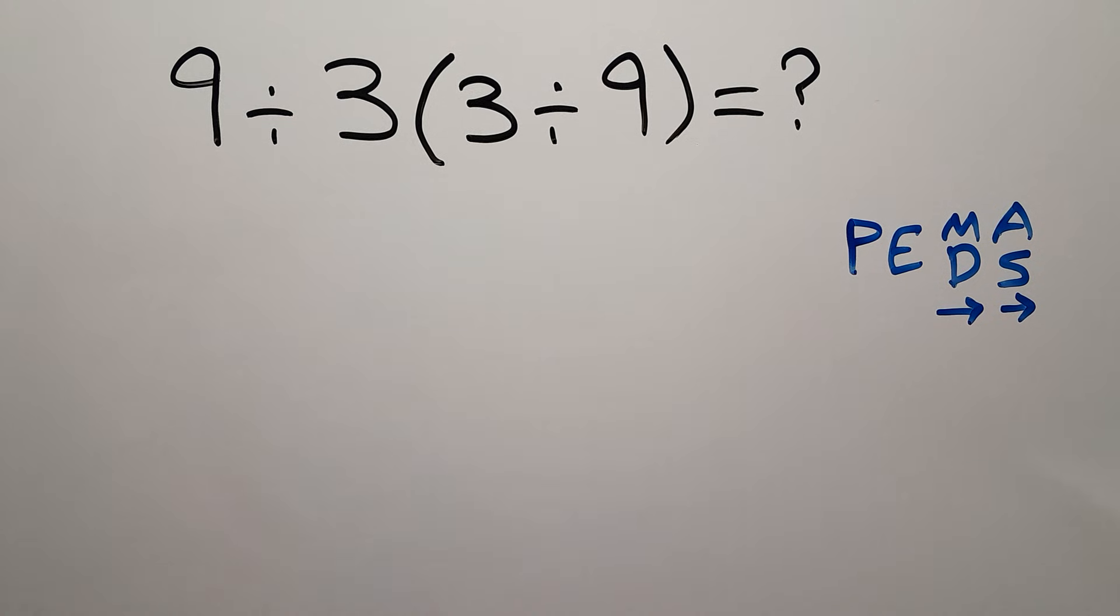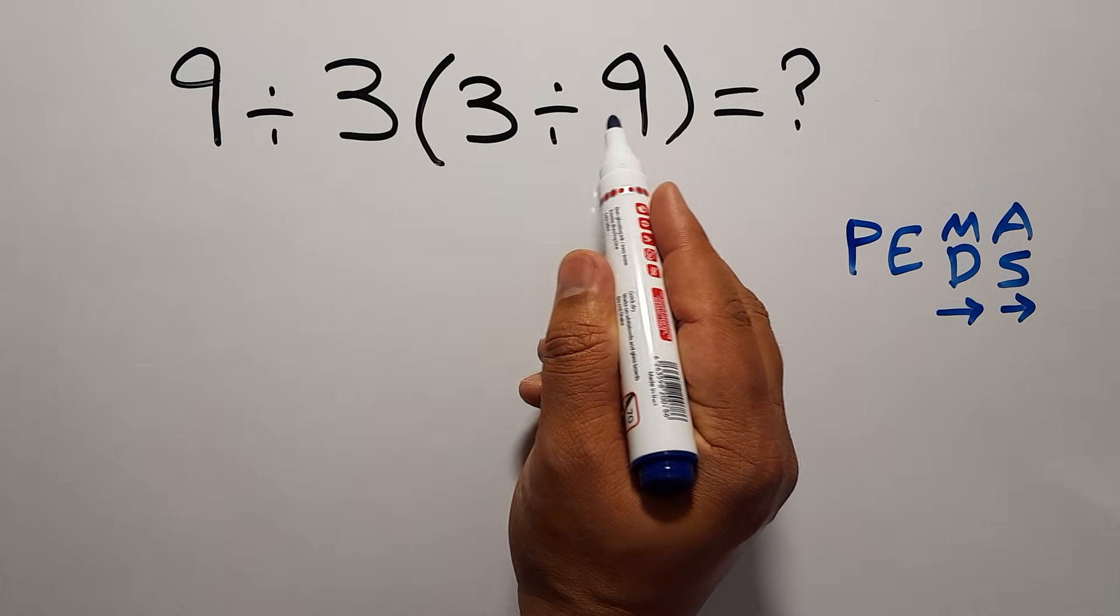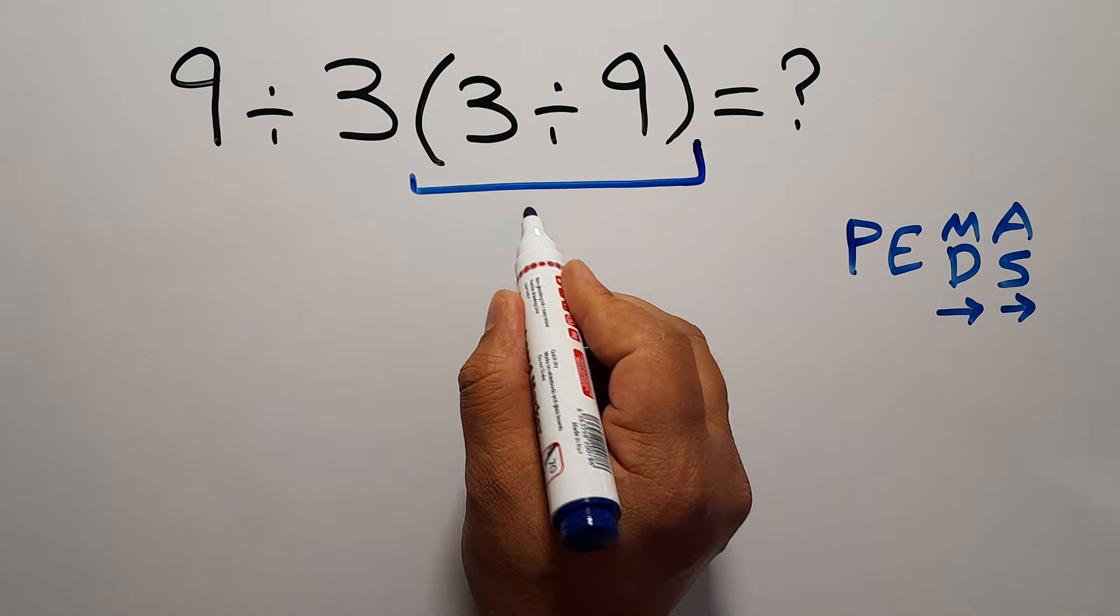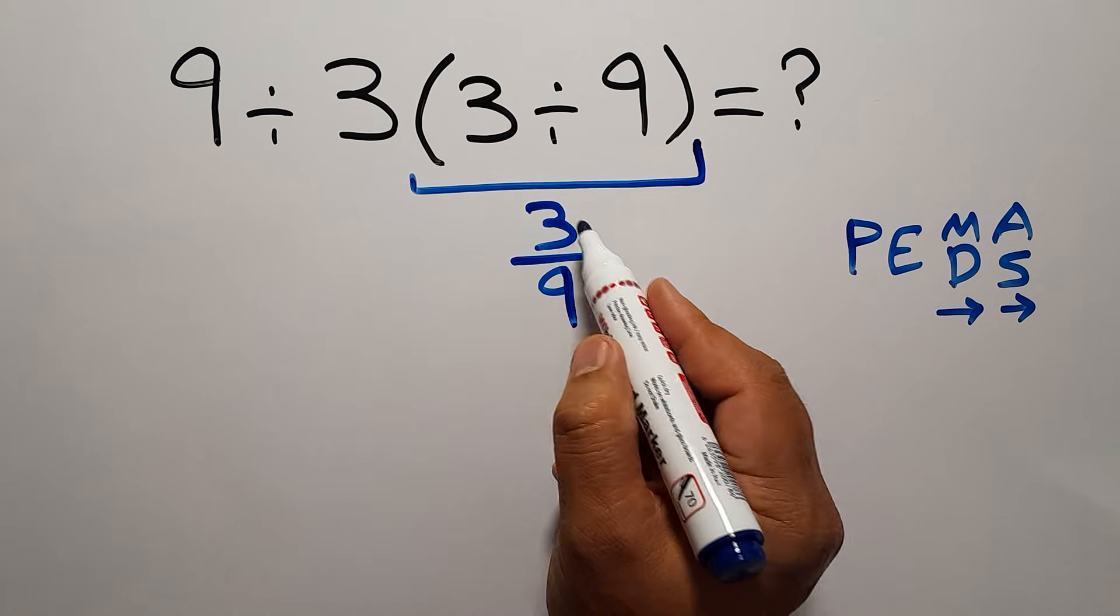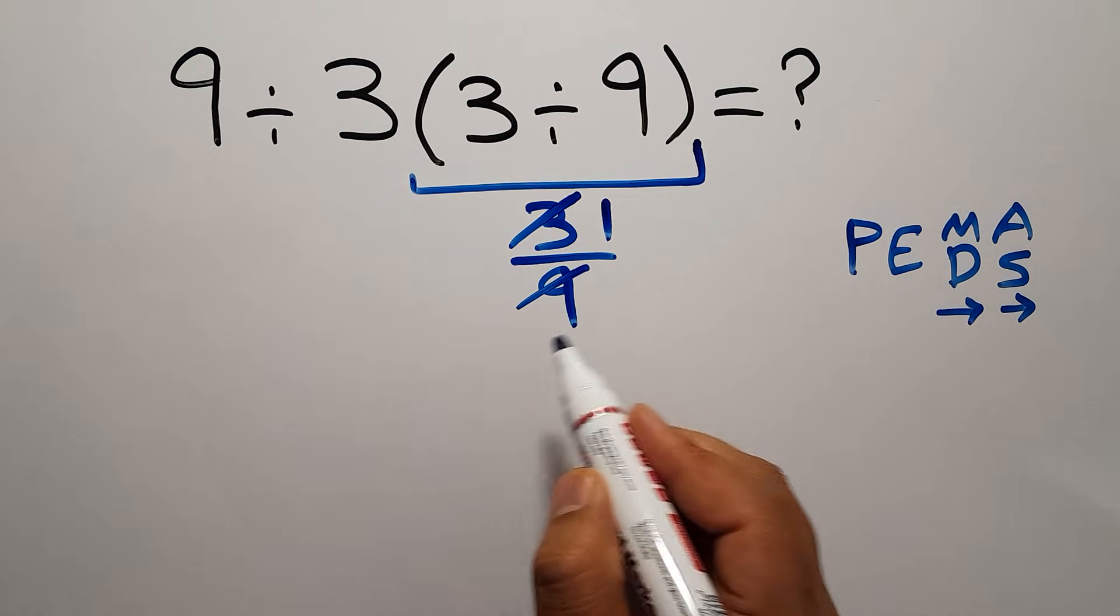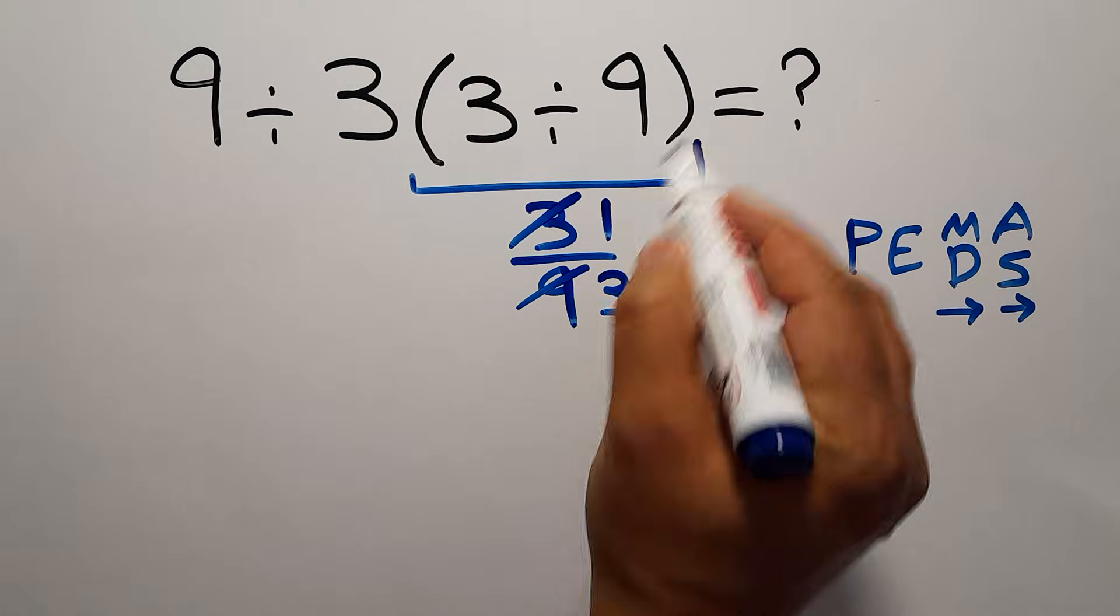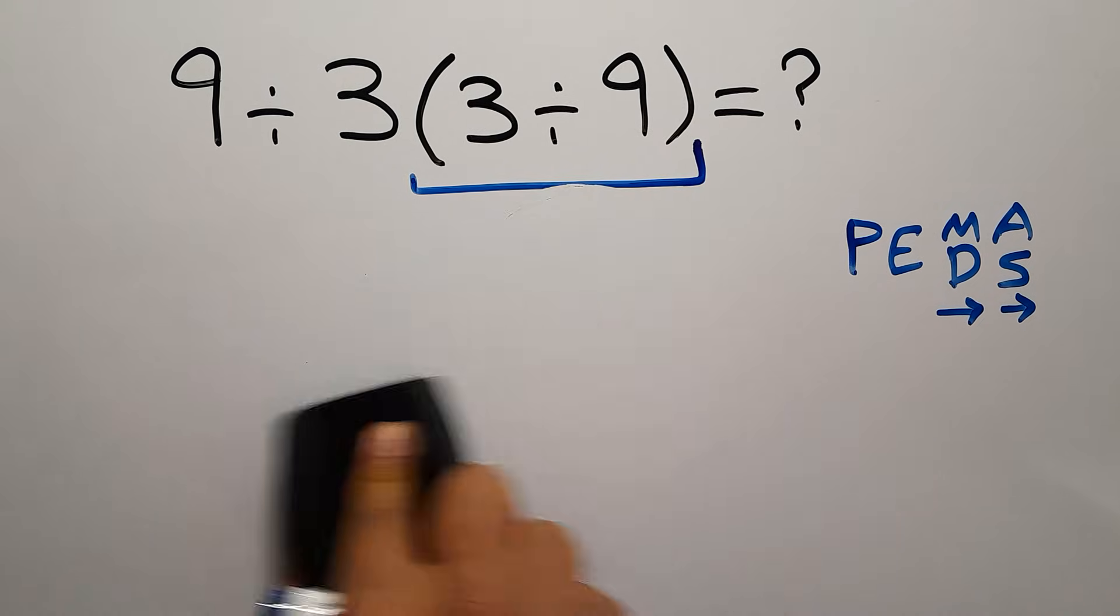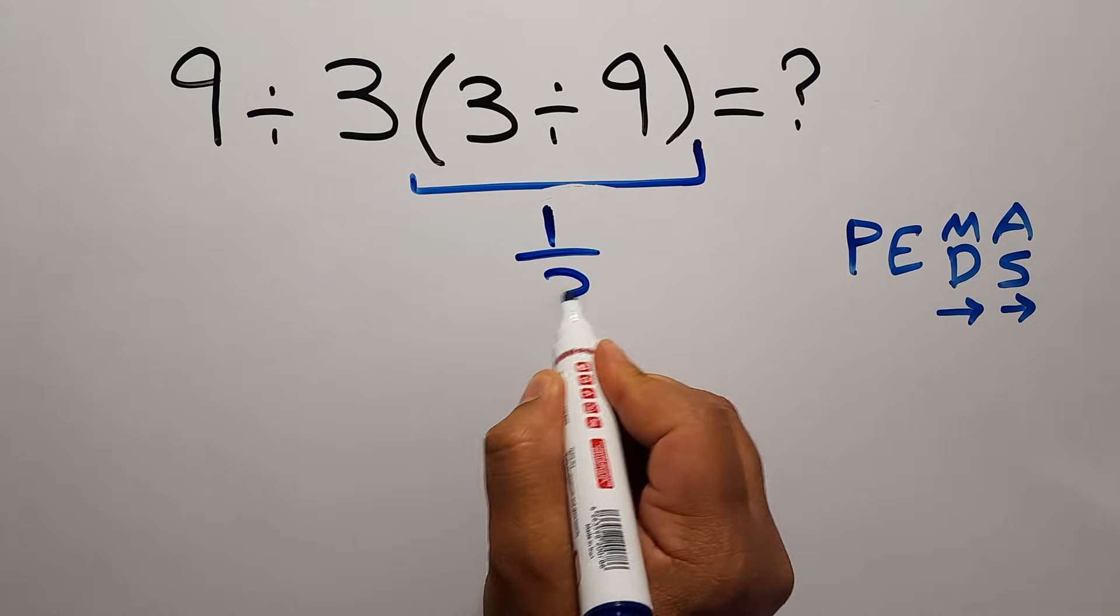So first, these parentheses. Inside these parentheses, we have 3 divided by 9, can be written as 3 over 9. 3 divided by 3 gives us 1, and 9 divided by 3 gives us 3. So these parentheses can be written as 1 over 3. We have here 1 over 3.